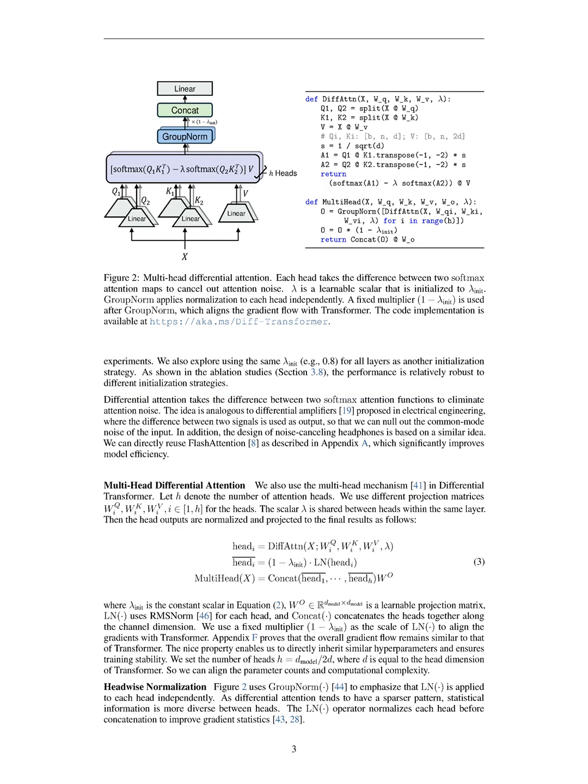Section Summary. In this section, we introduce the differential transformer, DIF transformer, which enhances large language models by employing a novel attention mechanism that cancels out attention noise, allowing the model to focus more effectively on relevant information. Our experiments demonstrate that DIF transformer significantly improves key information retrieval and overall performance while requiring fewer resources compared to traditional transformers.